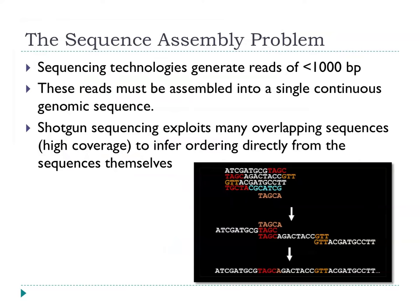That's a quick run-through of sequencing technologies. One of the problems when looking at genome sequences — whether using Sanger or newer technologies, and it's slightly worse with newer technologies due to shorter read lengths — is that we don't get a whole genome of, say, one million base pairs from our sequencing run. We end up with thousands, even tens of thousands, of reads with less than a thousand base pairs in each. So we're left with a huge molecular jigsaw that we have to assemble.